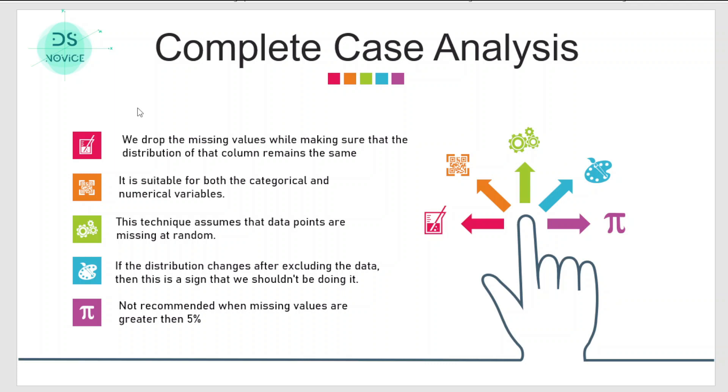The technique assumes that data is missing at random and there is no deliberate attempt in keeping the missing values. The good thing is that this technique is suitable for both categorical as well as numerical variables. If the distribution changes after excluding the missing values, it is a sign that we should not remove missing values from the data and should use some other technique. Generally what we do is we set a cutoff or threshold - if missing values is greater than 5 percent or 10 percent, we should not apply this technique.